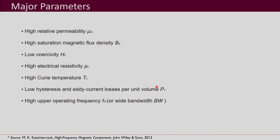The important parameters to look into when selecting a magnetic material are: first, high relative permeability — the relative permeability of the material should be as high as possible. Then saturation flux density — it is desirable to have a high saturation flux density. Then low coercivity Hc, because coercivity is the coercive force required to make the magnetic flux density equal to zero. This gives Hc on the BH curve — this part is your coercivity and this part is your residual flux Br.